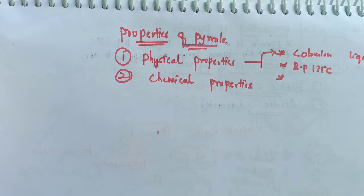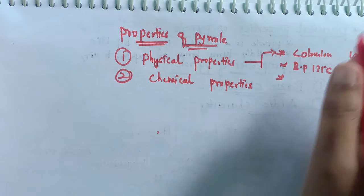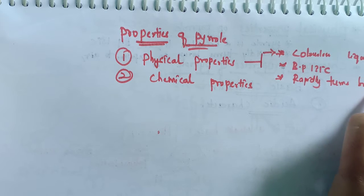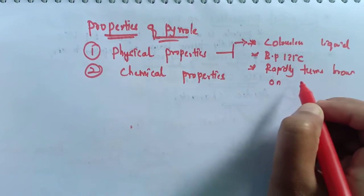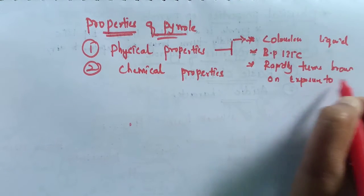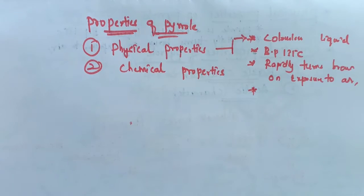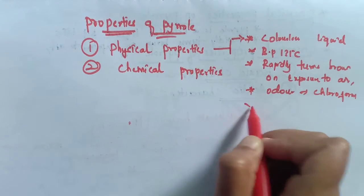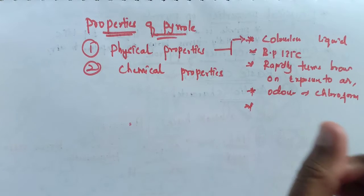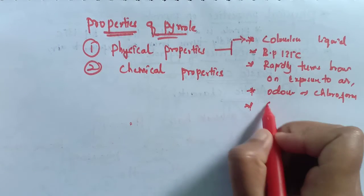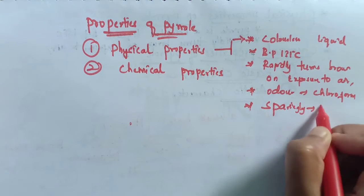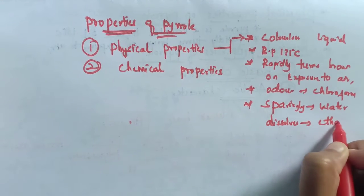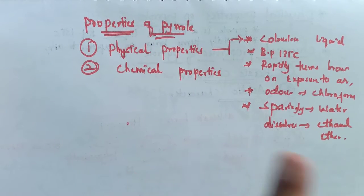The next important point is that pyrrole rapidly turns brown on exposure to air. Its odor is similar to that of chloroform. Another important point is that it is sparingly soluble in water, but it dissolves in ethanol and ether. These are the physical properties of pyrrole.